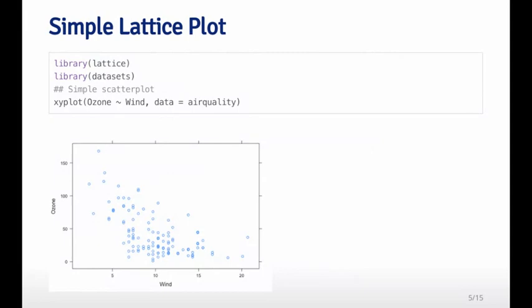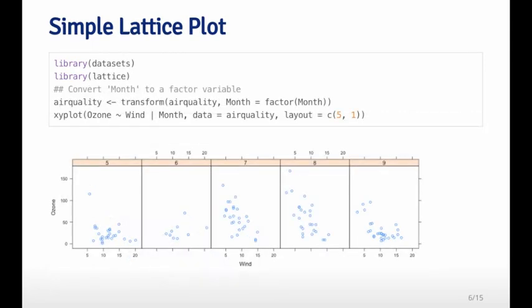Here's a very simple scatter plot. I load the lattice package and the datasets package, and I'm plotting the ozone and wind variables from the air quality data frame. I got ozone on the y axis and wind on the x axis. This is your basic scatter plot which looks very much like a scatter plot in the base plotting system. Notice that the defaults are a little different. It does use open circles, but they're colored blue by default.